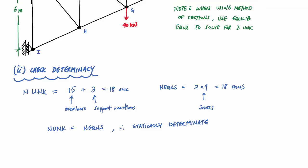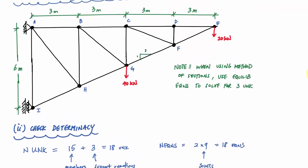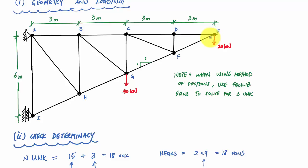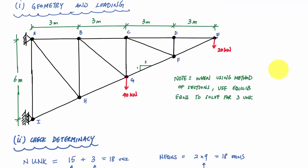Now that we've determined the structure is statically determinate, we decide whether to use method of joints or method of sections. We could go joint to joint starting at E, going to D, using two equations and two unknowns at each step. But using the method of sections, if we can make a cut through three members and use the equilibrium equations, we can identify those three forces faster. Our cut is going to be through these members here — choosing the right side of the cut, since I haven't yet determined support reactions at A and I.